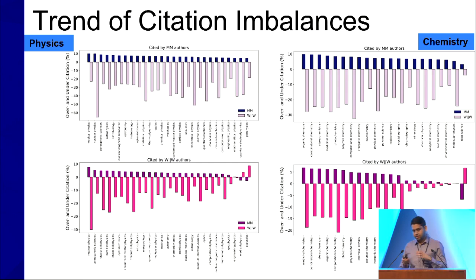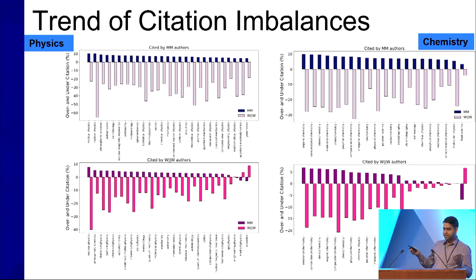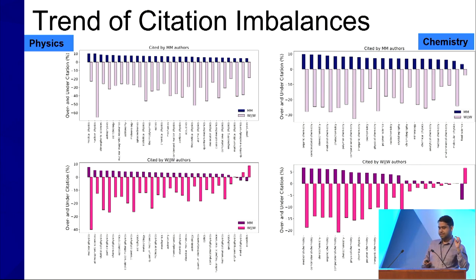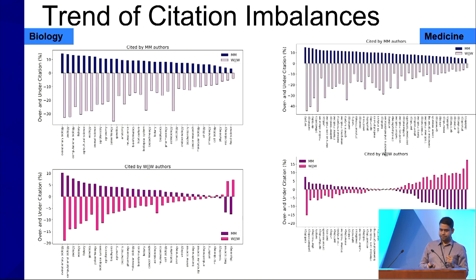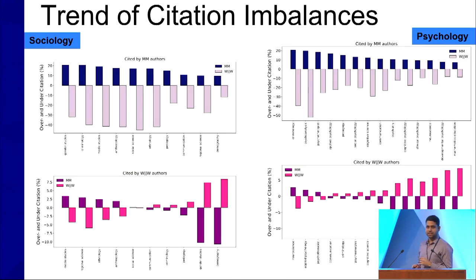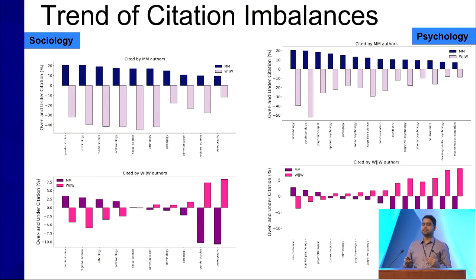That's computer science — now what about other fields? Looking at physics, chemistry, biology, medicine, sociology, and psychology, in all cases we see a consistent over-citation by men across all these fields.